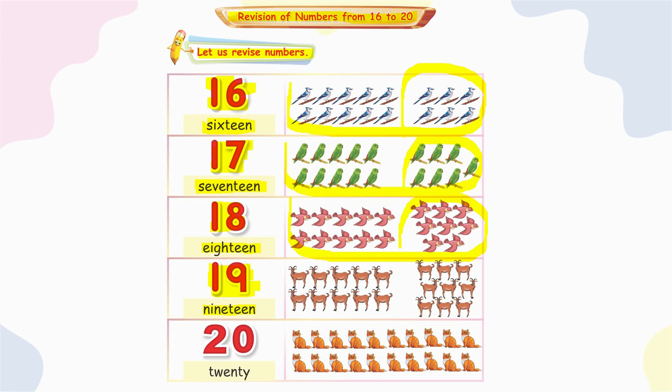20. Two tens make 20. T-W-E-N-T-Y, twenty. Here are 20 cats.